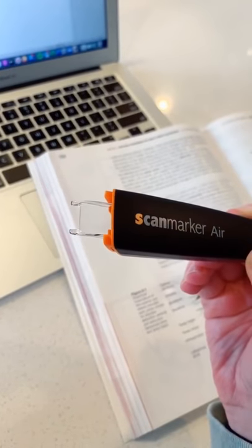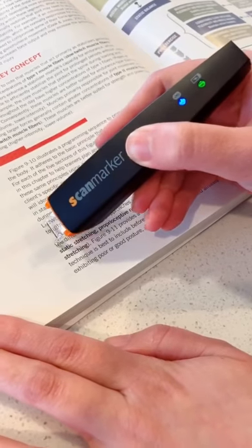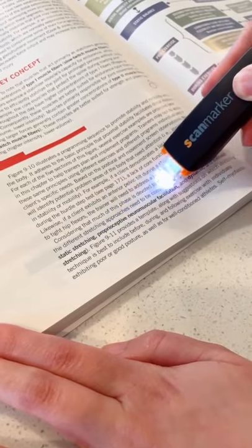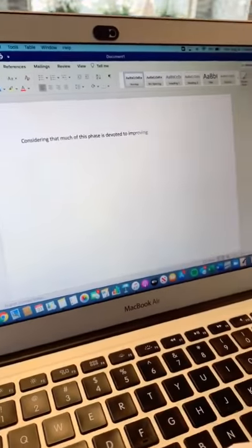It's a wireless digital highlighter and scanner for your notes and textbook. You just glide it over the sentence or paragraph you need to know and it will automatically transfer it to your computer and read it aloud for you.